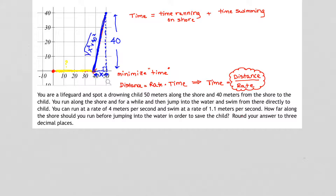How about the side when we're running along the shore? Notice the little piece where we jump in the water — that's X. The total distance along the shore to the perpendicular at 50 is 50 units. So the part where the lifeguard is running along the shoreline can be represented by the expression 50 minus X. It's 50 units all the way, but we subtract off that little X piece. So the distance along the shore is 50 minus X.